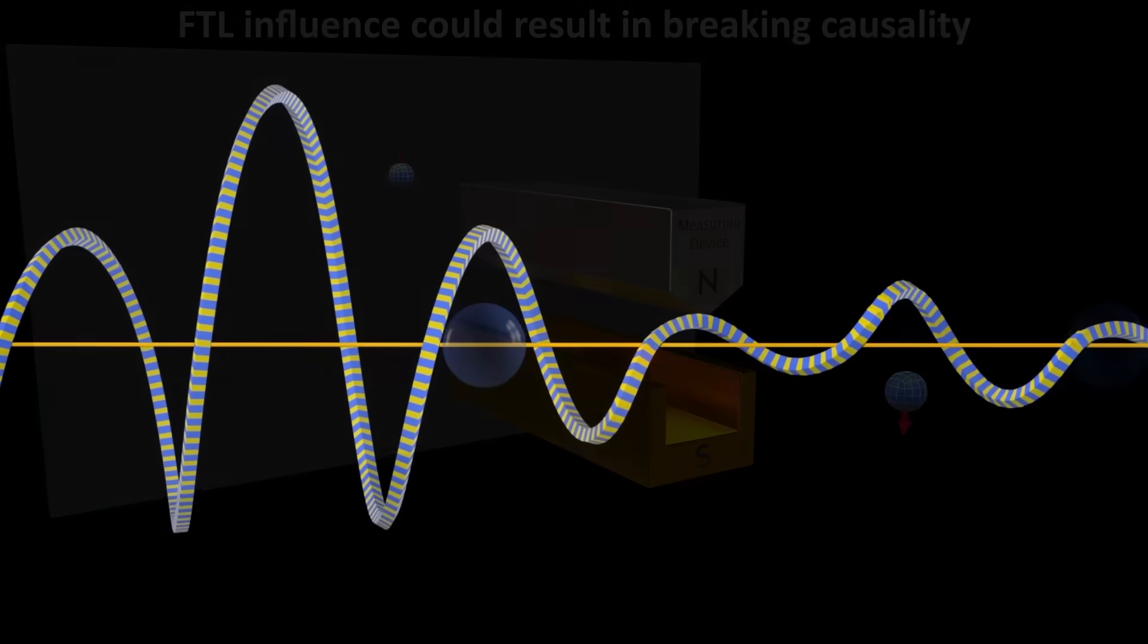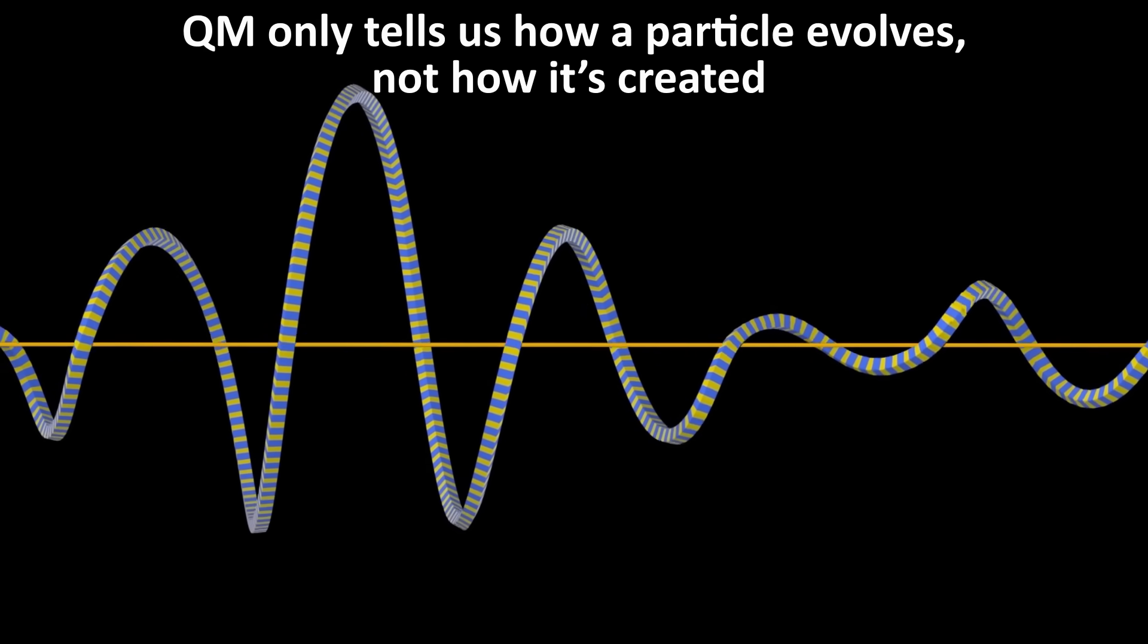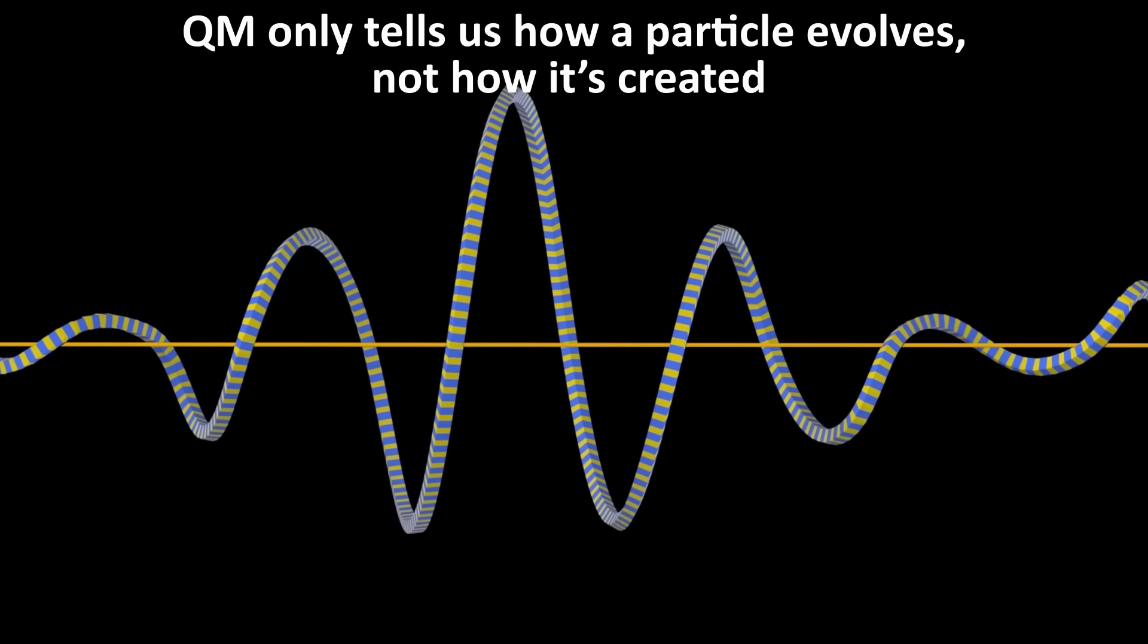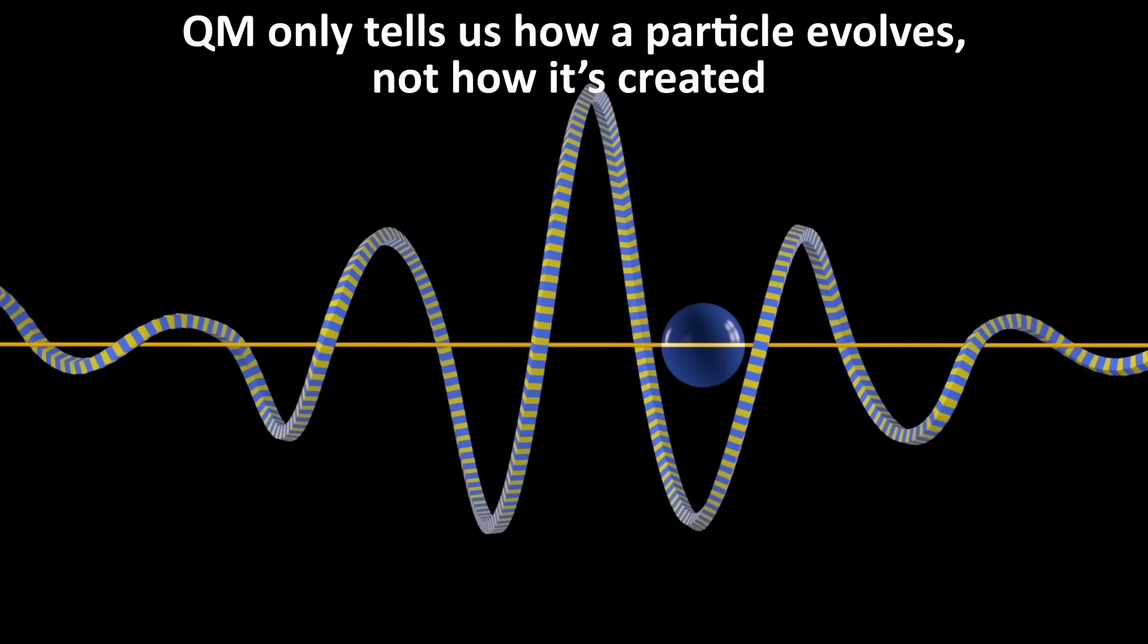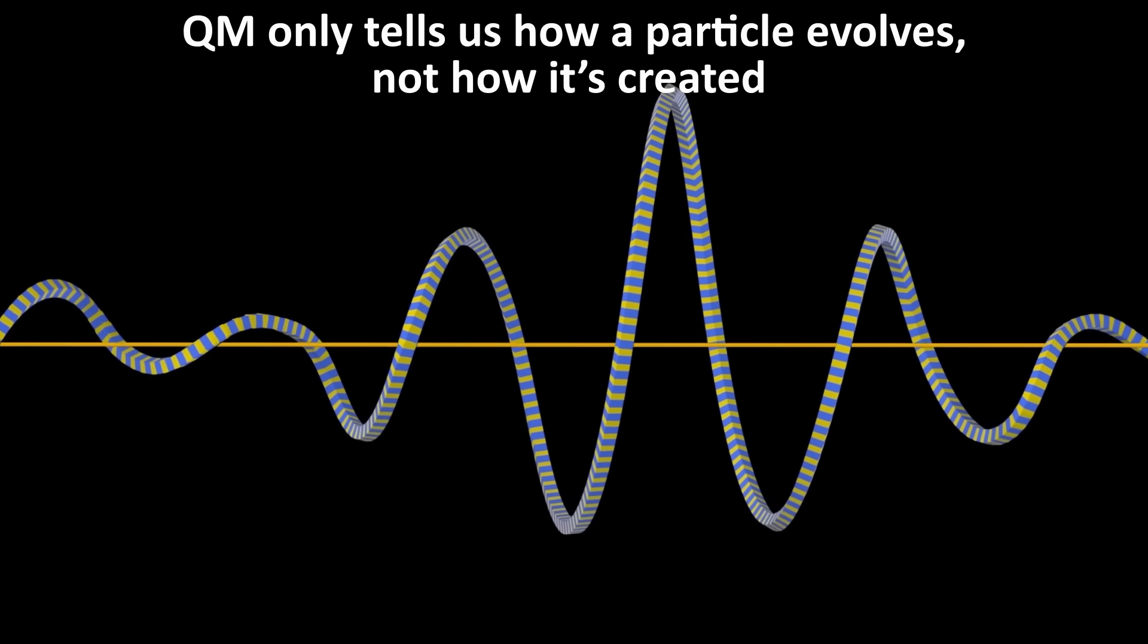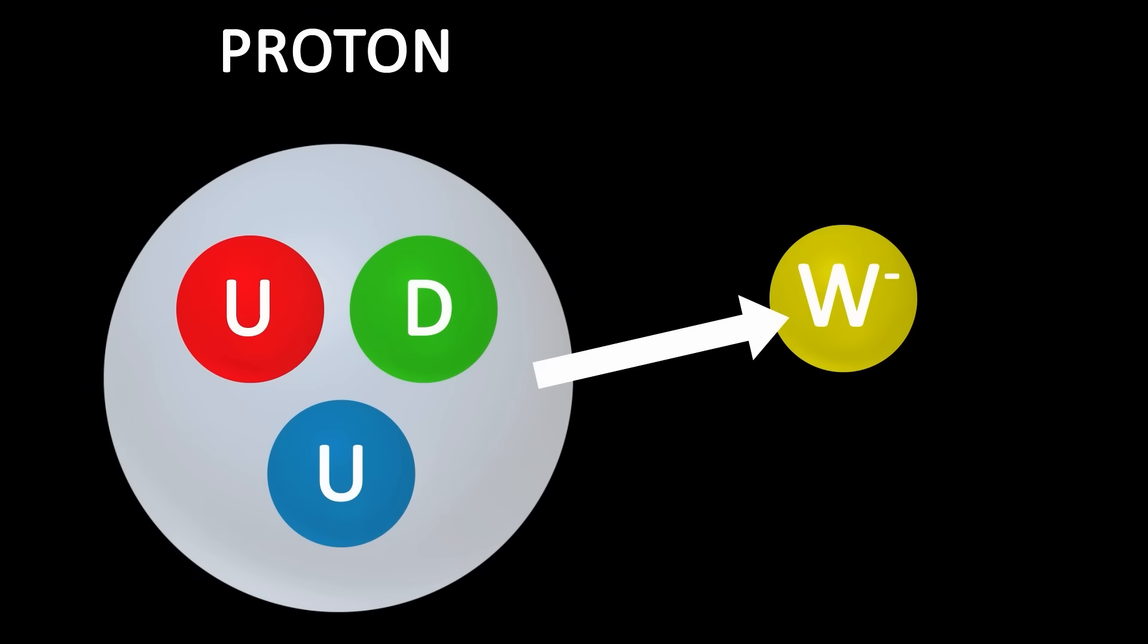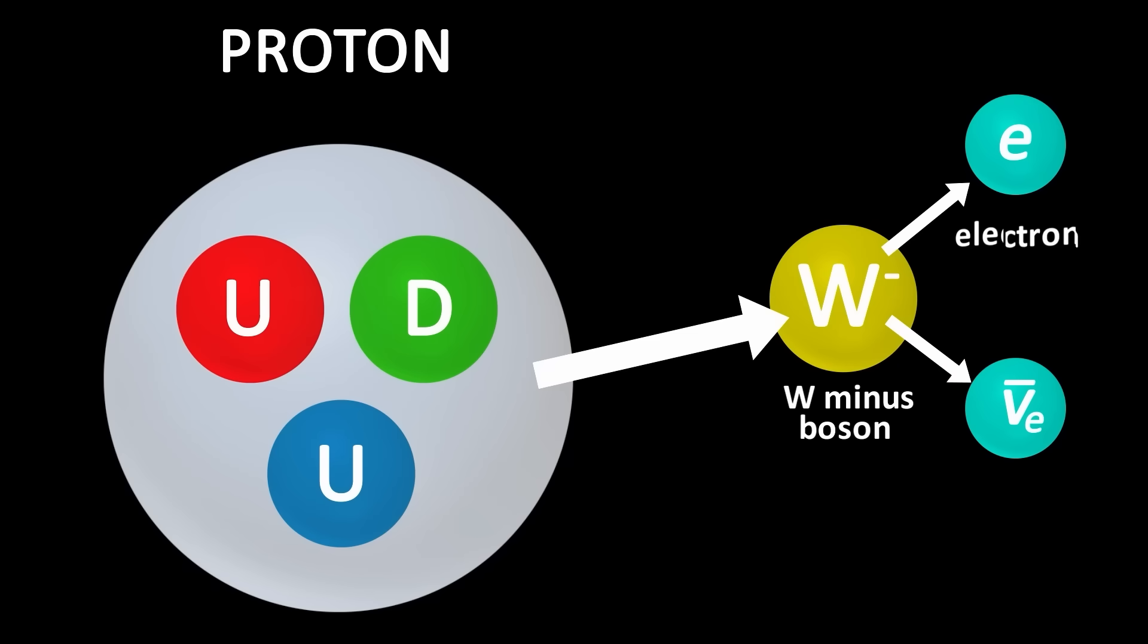A second problem with quantum mechanics is that it only tells you how a particle evolves over time. That is, how it goes about its business. It does not tell you how it is created or annihilated. So it can't account for things like beta decay, due to the weak nuclear force, where a neutron transforms into a proton, an electron, and an anti-neutrino.